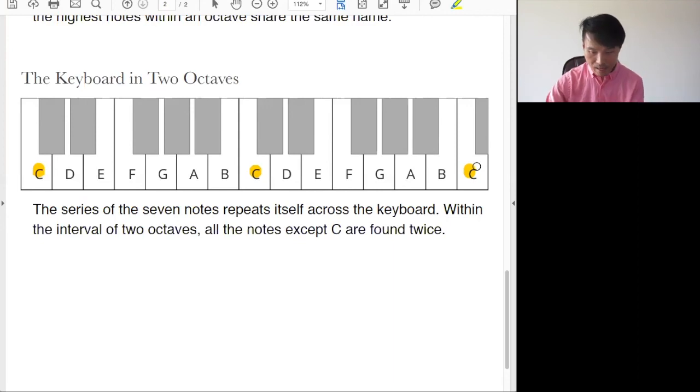And I can observe that the series of notes, D, E, F, G, A, B repeats exactly twice, D, E, F, G, A, B. And C, which is the beginning and the end of the two octaves span. This happens three times. C, C, here, and C there.